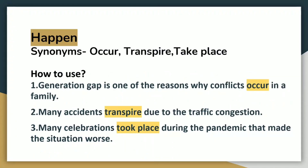The next word is HAPPEN. While writing about some incidents in an essay, we need to use this word. You can explain those incidents in a more effective way by using these advanced synonyms: occur, transpire, take place. Generation gap is one of the reasons why conflicts occur in a family. Many incidents transpire due to traffic congestion. Many celebrations took place during the pandemic that made the situation worse.